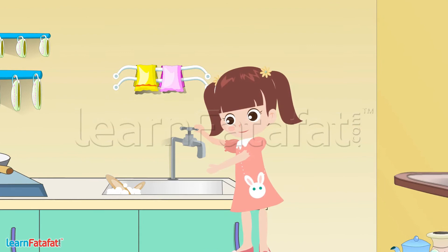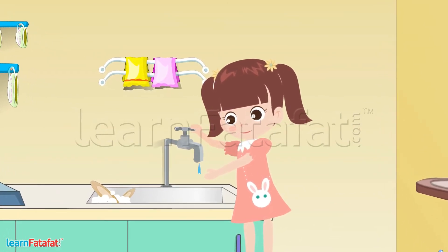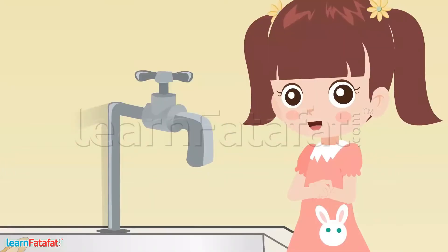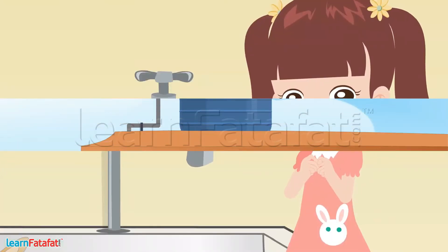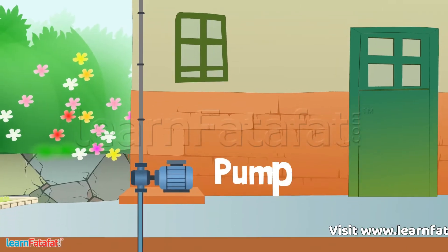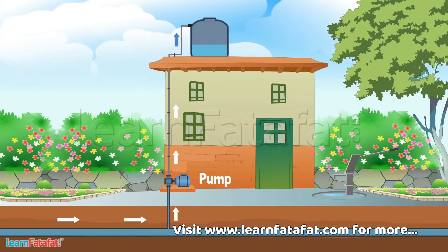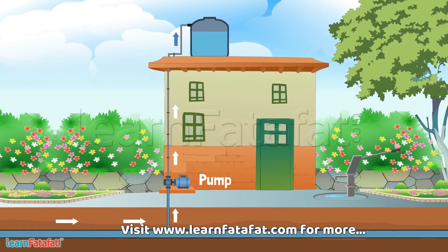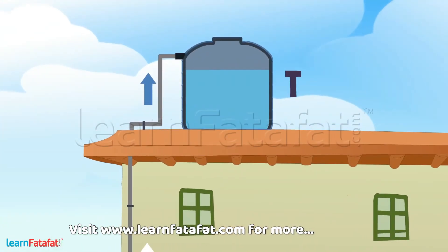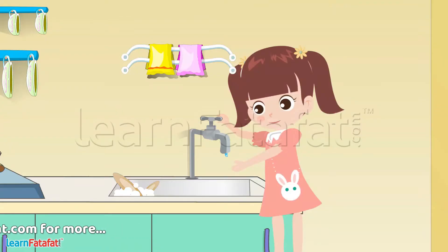Now let's see from where Ruchi gets water. In her house, there is a water pump that pumps water. This water is stored in a tank. From the tank, water comes into the taps.